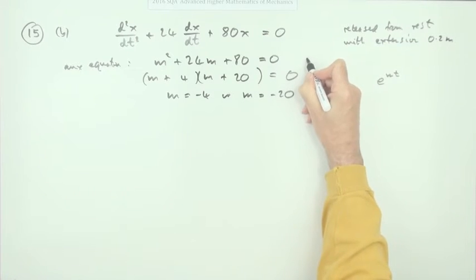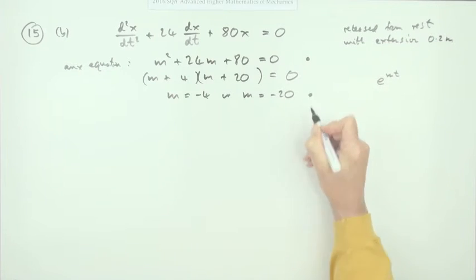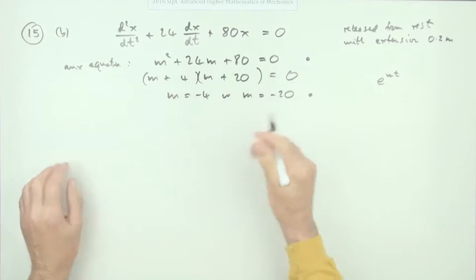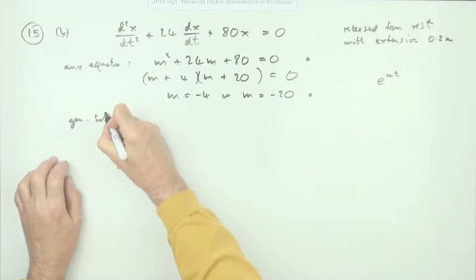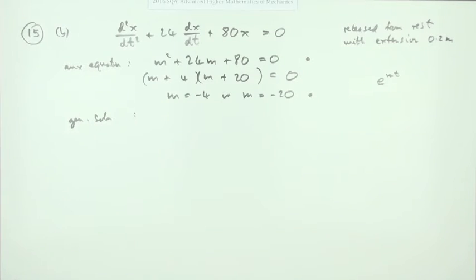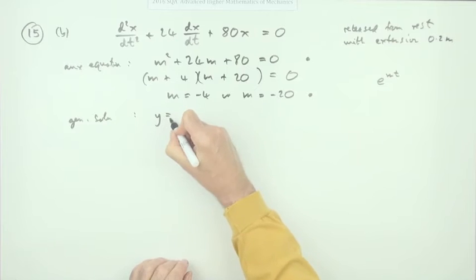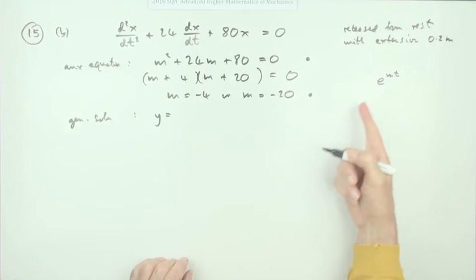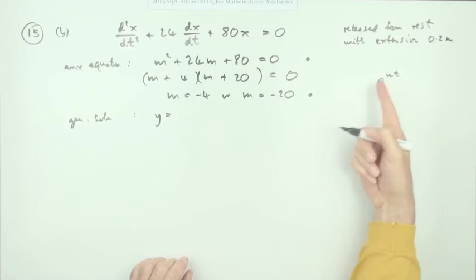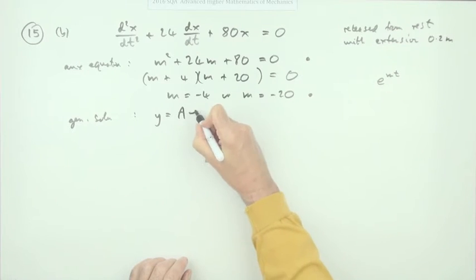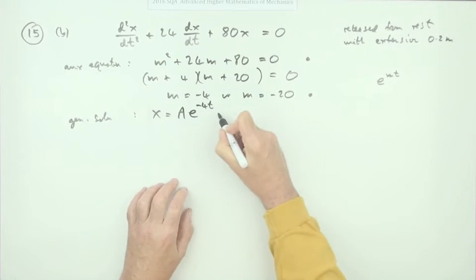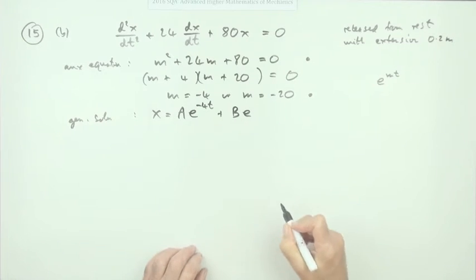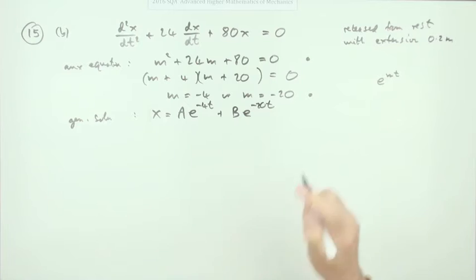That's two marks — one for forming the auxiliary equation and one for solving it. Since this is entirely a homogeneous equation, the general solution is just the complementary function: x = Ae^(−4t) + Be^(−20t). You get a mark for writing the general solution correctly.